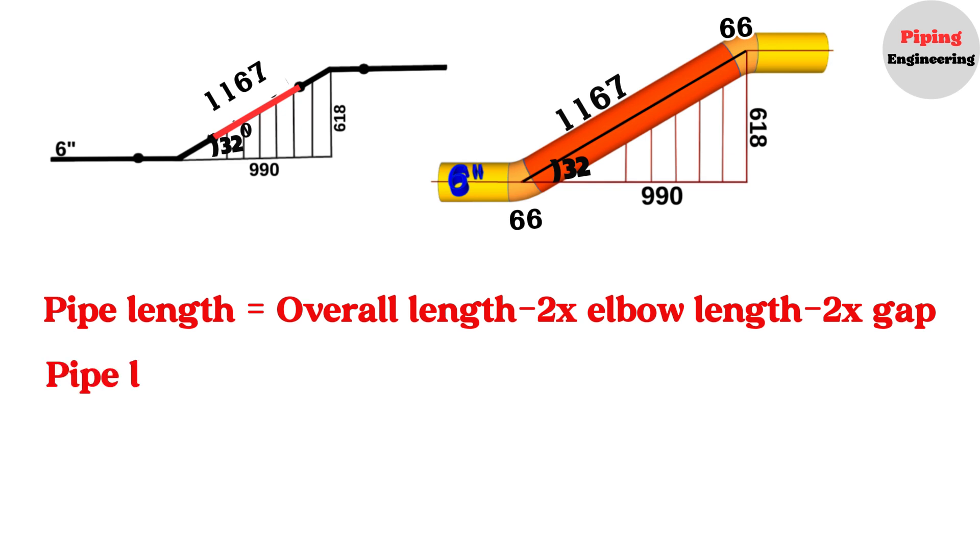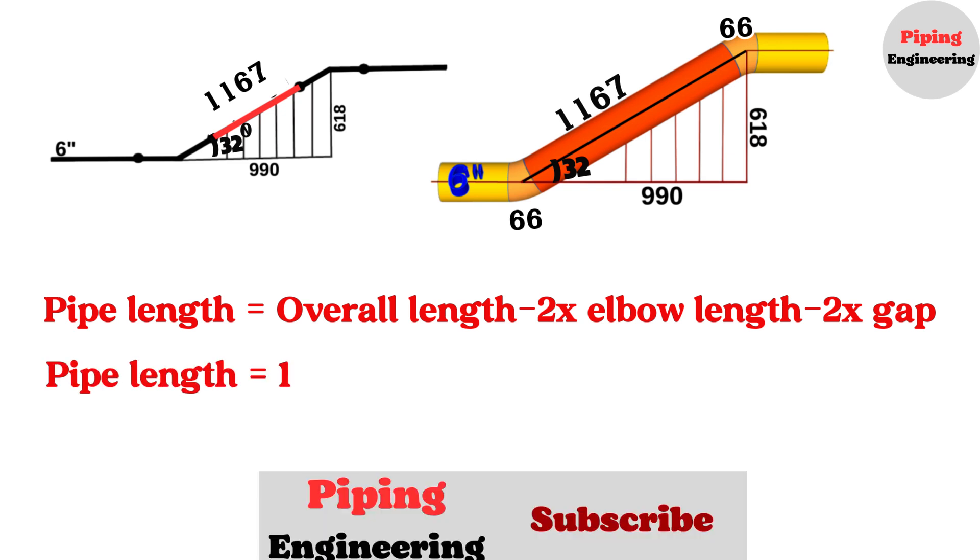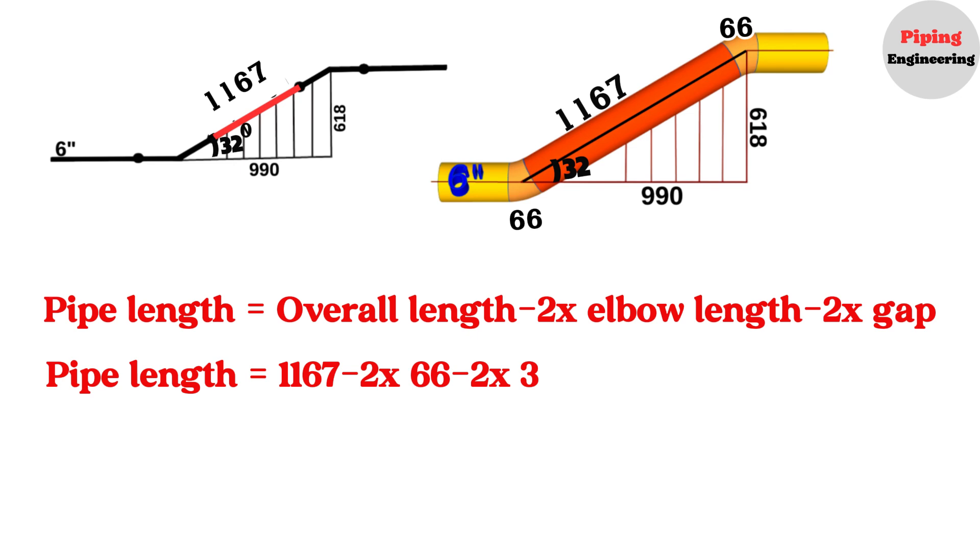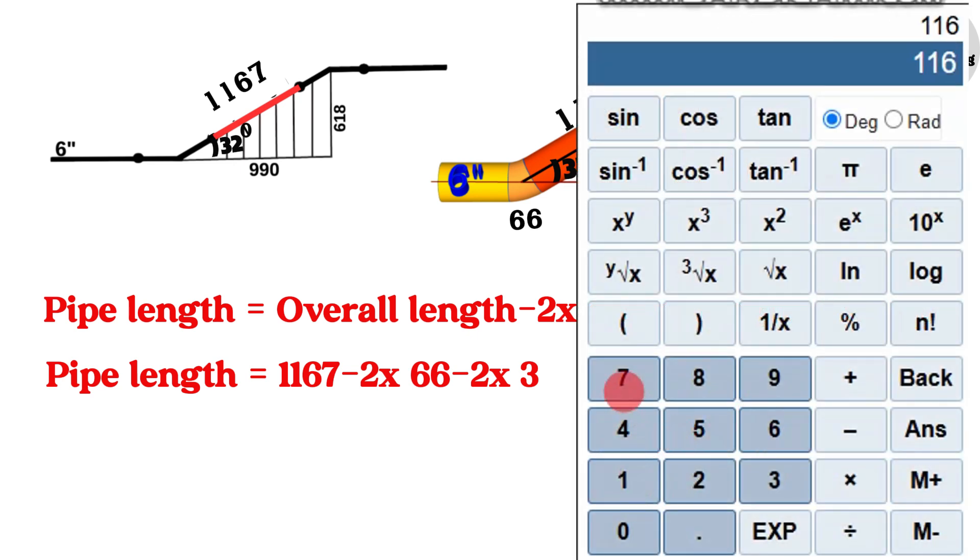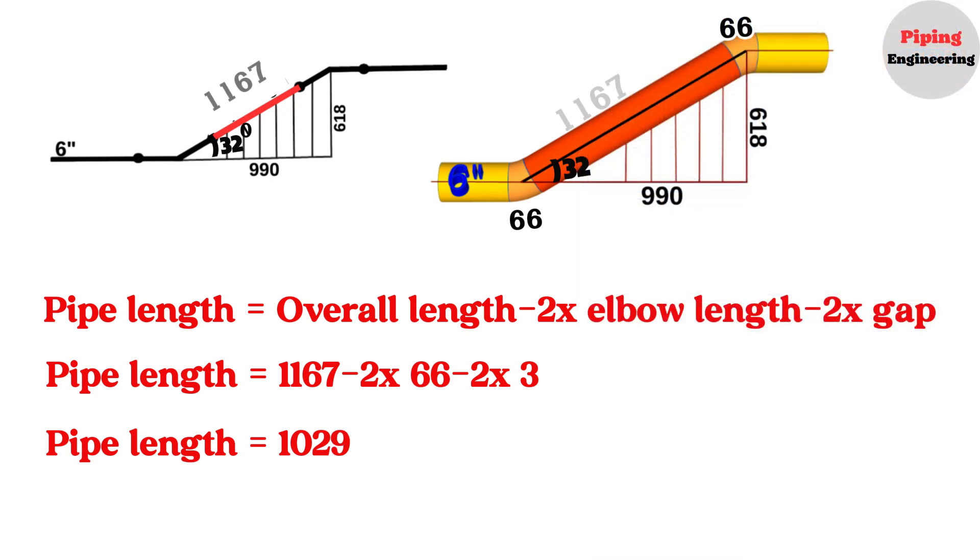Pipe length equals the overall length 1167 minus 2 times the elbow length 66 and minus 2 times 3 for the gaps for welding. Using a calculator, 1167 minus 2 multiplied by 66 minus 2 multiplied by 3 equals 1029. So, we calculated and found that the length of this red-colored pipe between the two elbows is 1029 millimeters.